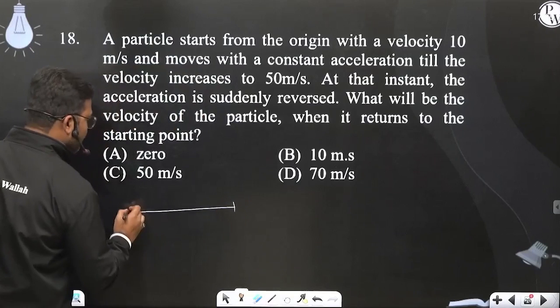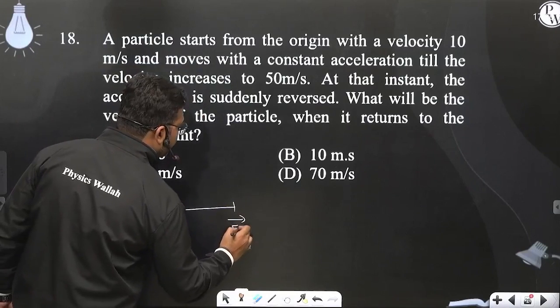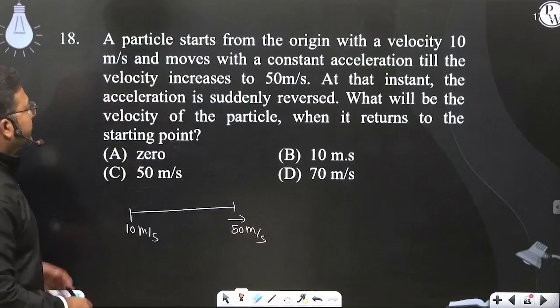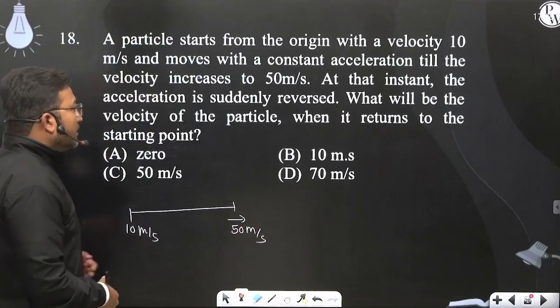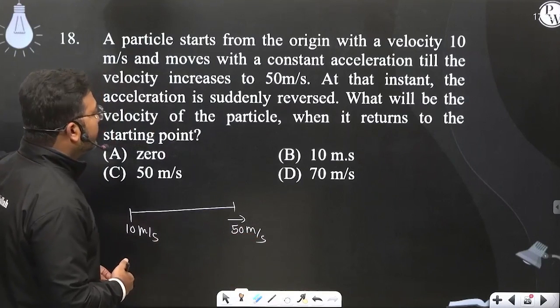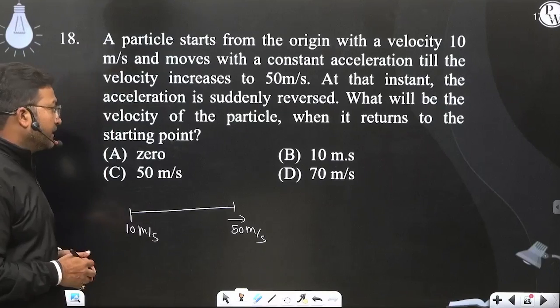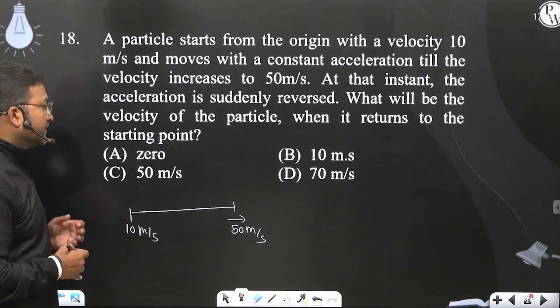So this is what happens to this instant. Acceleration is suddenly reversed. What will be the velocity of the particle when it returns to the starting point? What will be the velocity of the particle when it returns to the starting point?